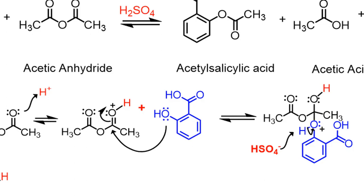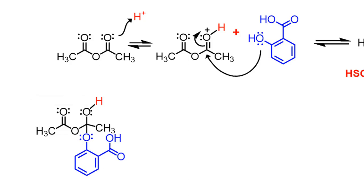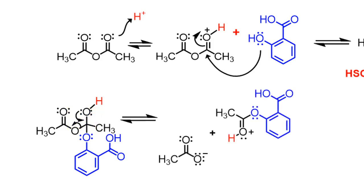After that, you still have an intermediate, but we need to get rid of the ester part. The way we do that is to do an elimination. You reform the C-O pi bond and then you break the C-O sigma bond as shown here.